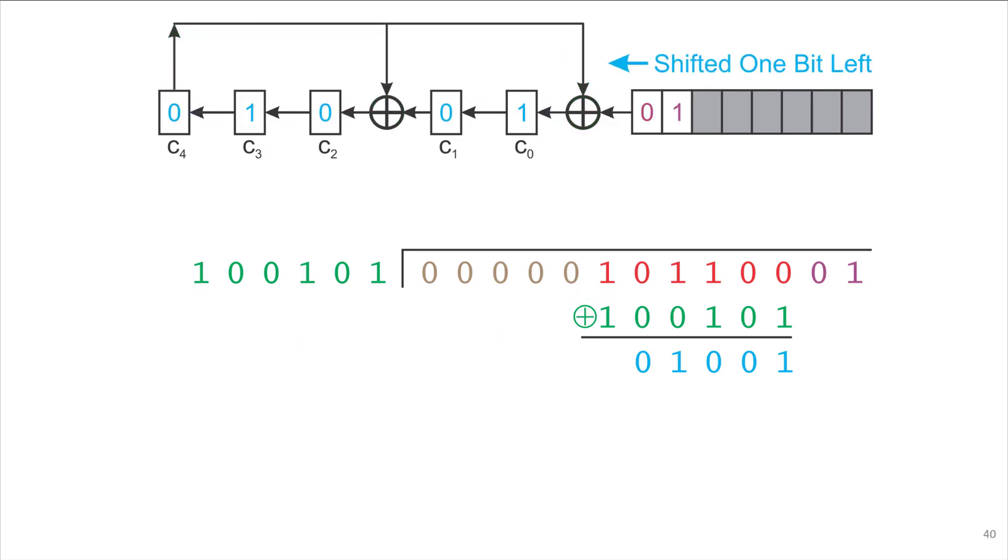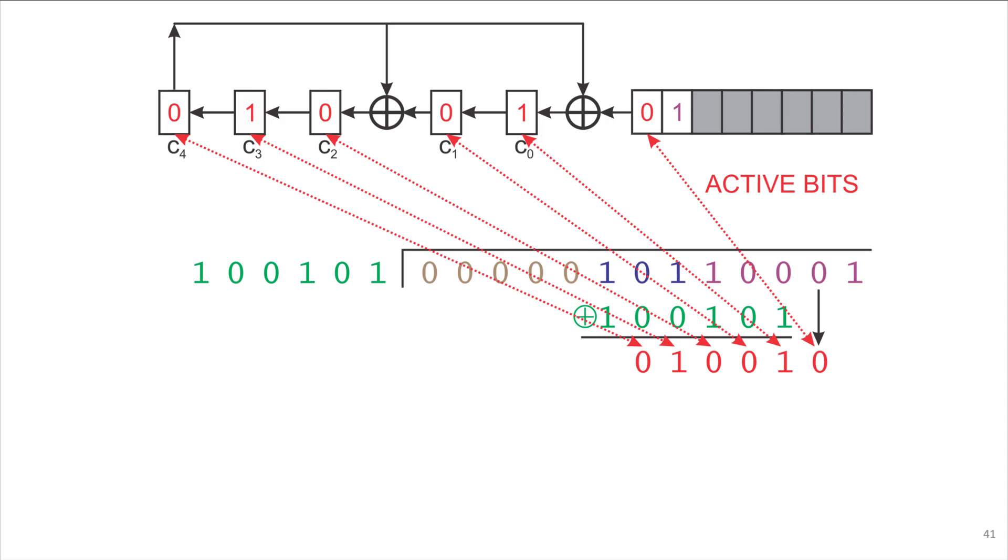We run a clock pulse through the hardware, and those values are shifted in the register and down in the long division. We now declare those bit results to be the active bits. At this point, there's two more bits to go.